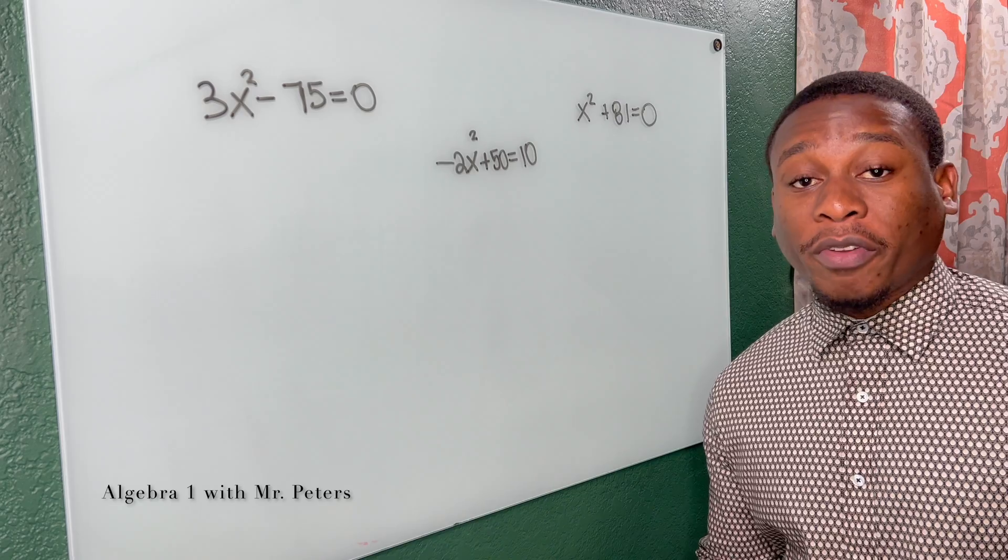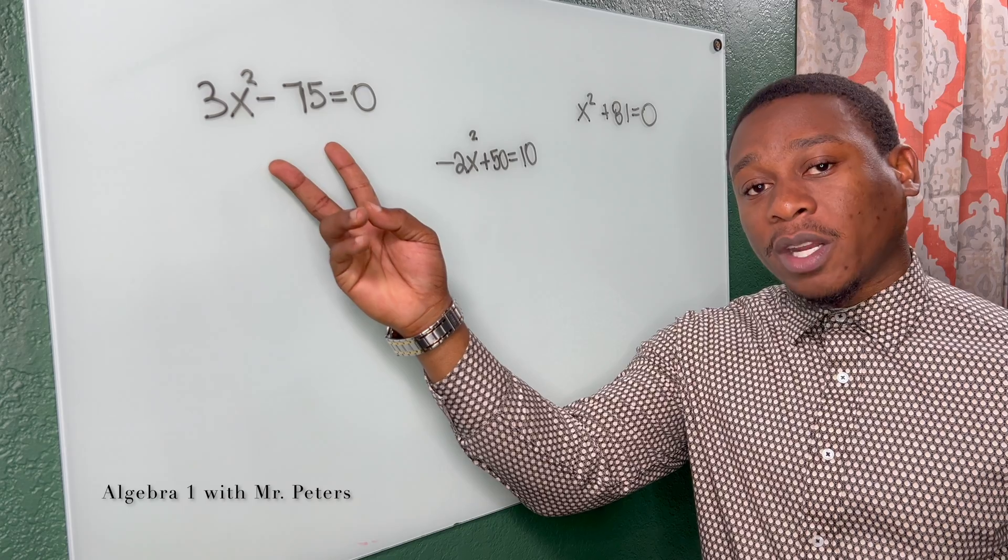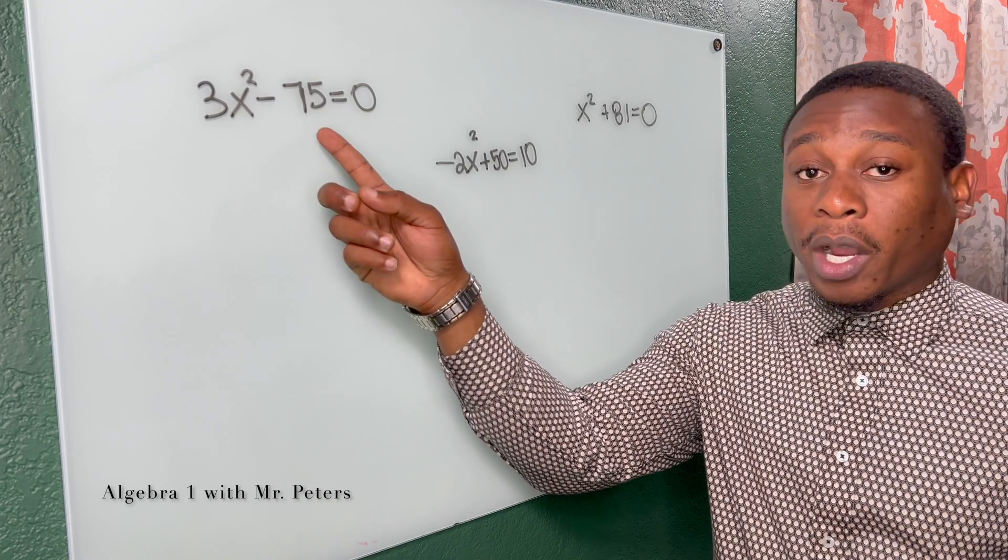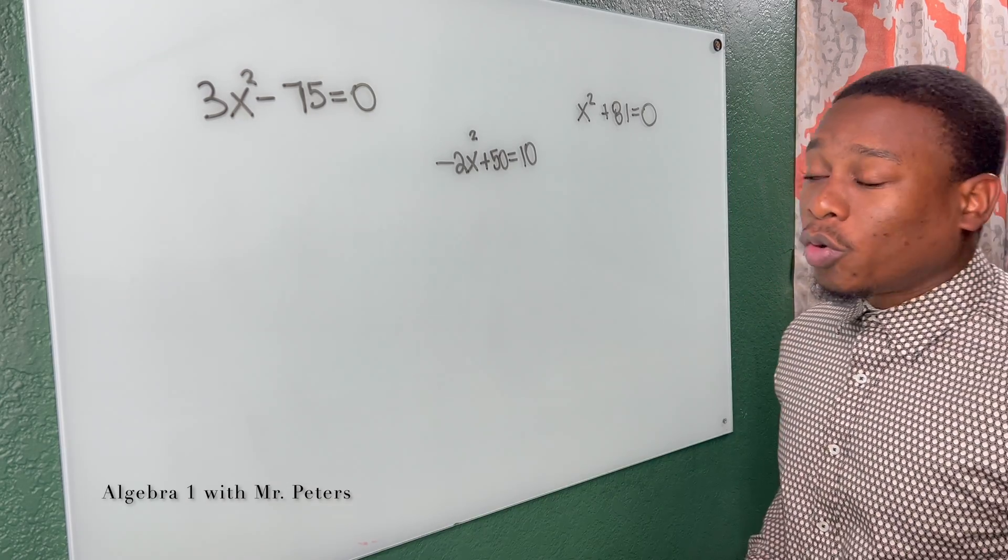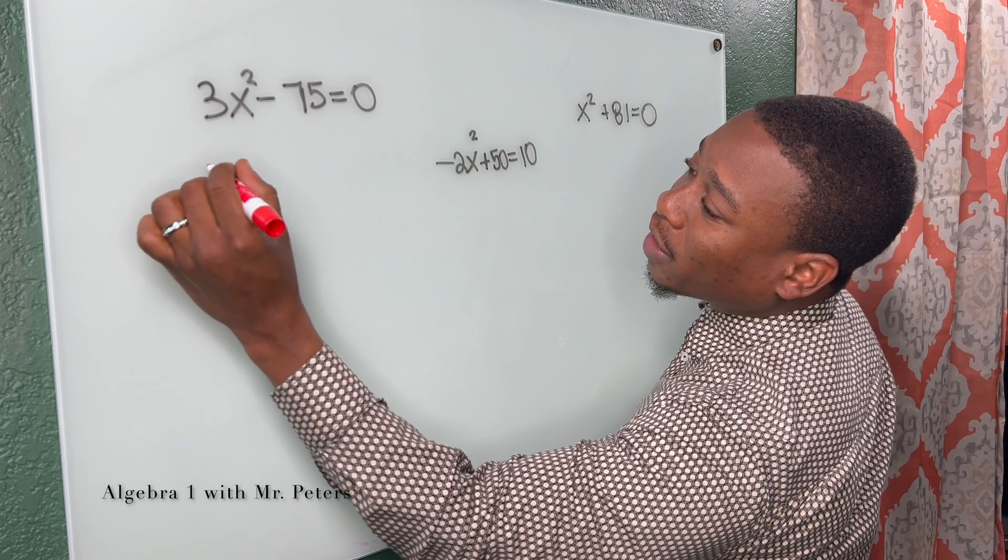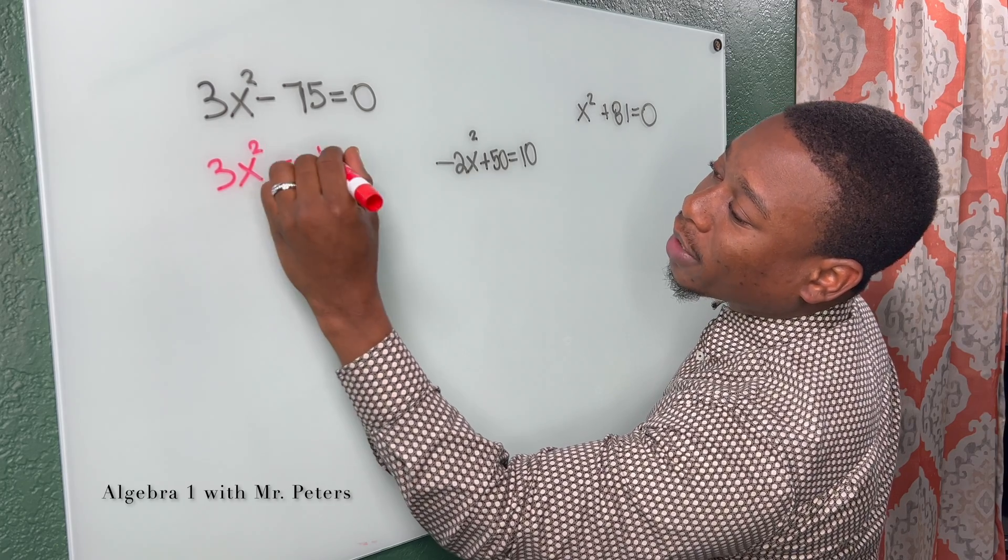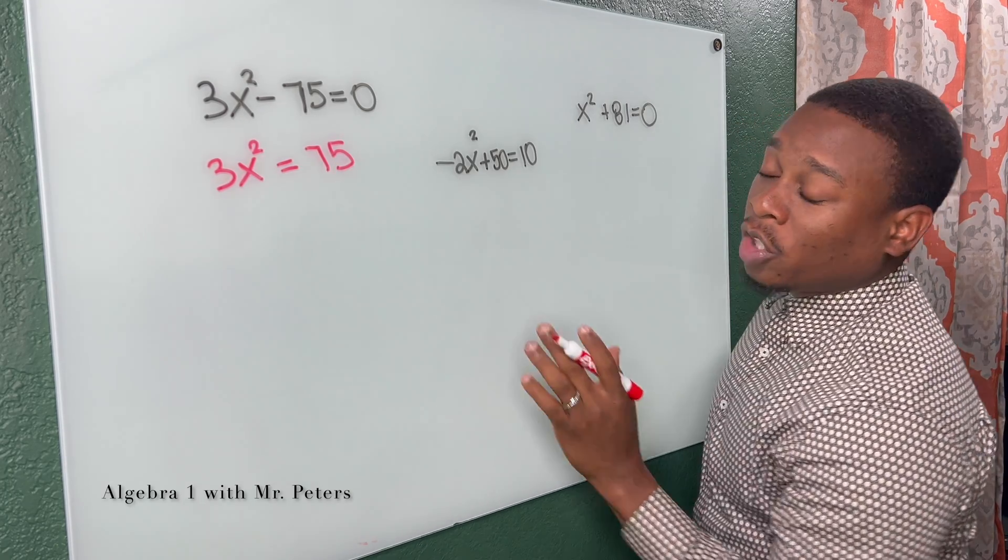When we're solving by the square root method, just remember that in the most common scenario, we're going to see an x squared term and a constant. So the first thing we always want to do is just to get x squared by itself. So after I add 75 on both sides, we have 3x squared is equal to 75.